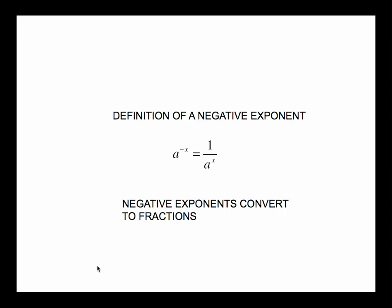We learned in a previous episode that the definition of a negative exponent is this: a to the negative x converts to the fraction 1 over a to the x. The negative exponent converts to a fraction, and when you convert it, this exponent becomes a positive exponent — it's just been relocated to the denominator.